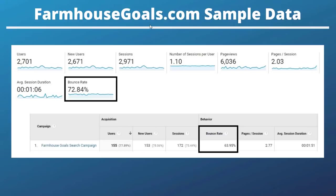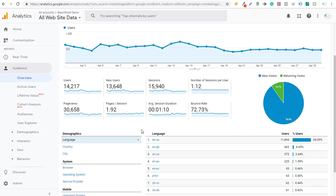For FarmhouseGoals.com, a lot of people click to the website and then click off on an affiliate product without visiting any additional pages. So I don't necessarily need to optimize for bounce rate, though I'd rather have higher pages per session and higher average session duration. Coming back to beachfront decor, let's look at some quick and easy ways to find where bounce rate issues are occurring.